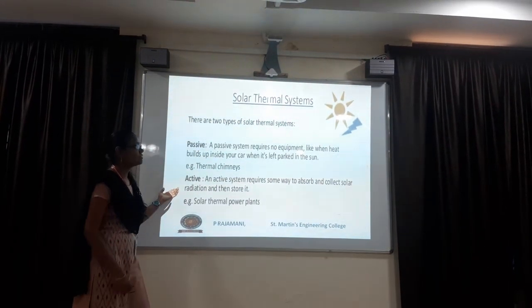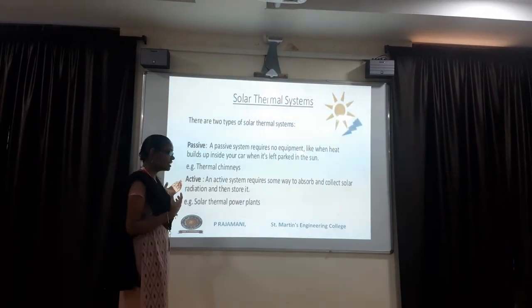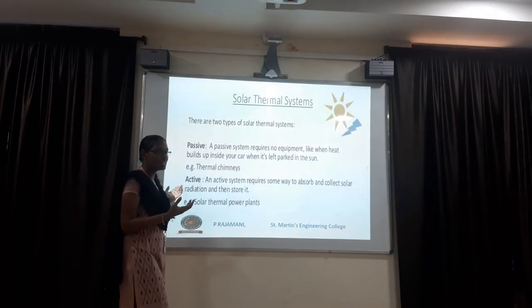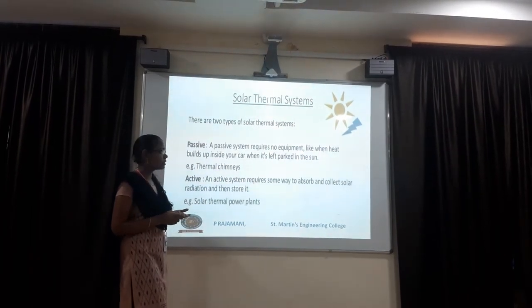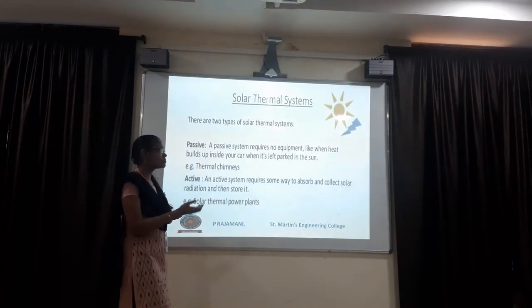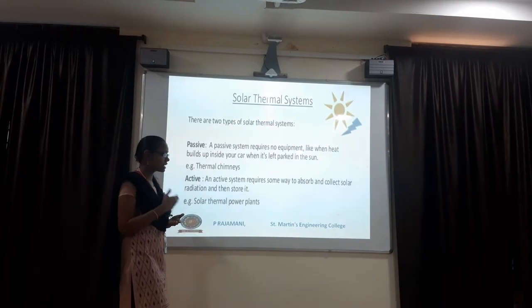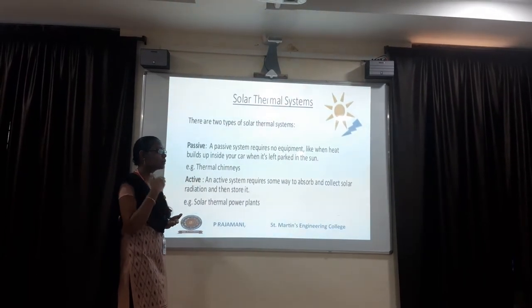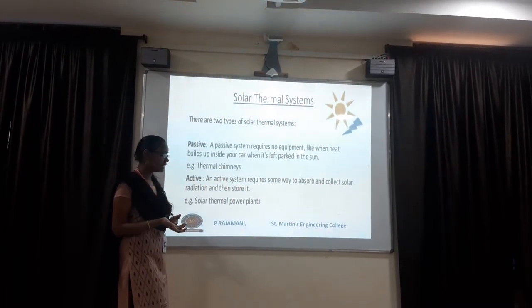In the active system, we have some component between the sun and the absorber body. That component absorbs the total solar energy and converts it into electrical energy.